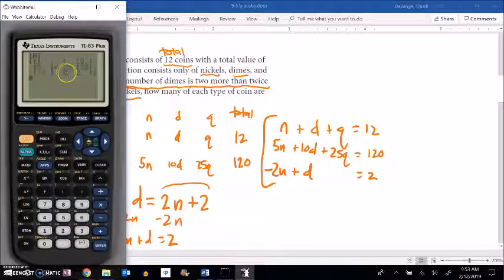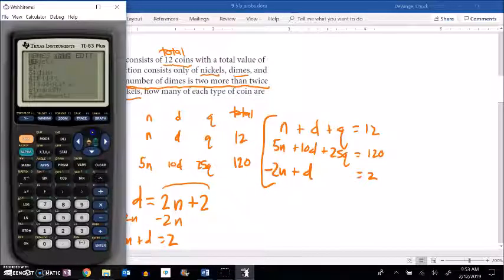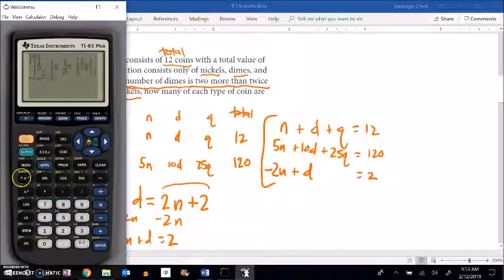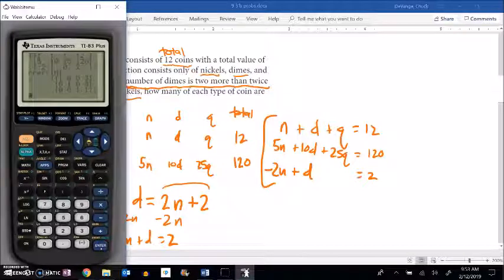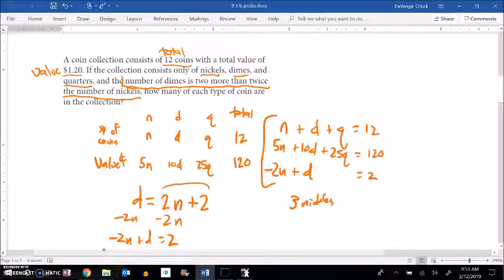And I always like to check it, make sure that I entered what I was hoping to enter. Looks right. So it looks like 3, 8, and 1. There must be 3 nickels, 8 dimes, and 1 quarter.